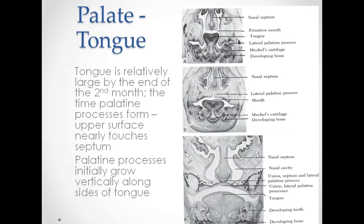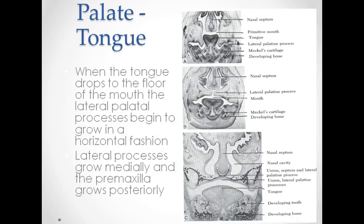The tongue is relatively large by the end of the second month, the time the palatine processes form. The upper surface of the tongue nearly touches the septum. The palatine processes initially grow vertically along the sides of the tongue. At the point when the tongue drops to the floor of the mouth, the lateral palatal processes begin to grow horizontally, while the premaxilla grows posteriorly.